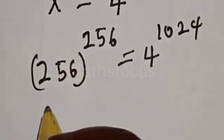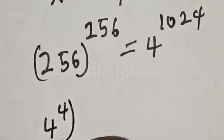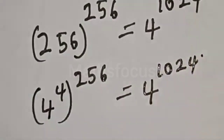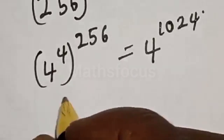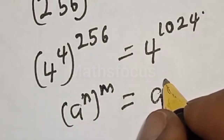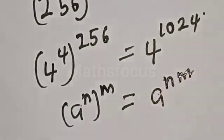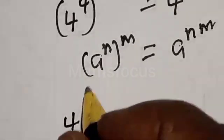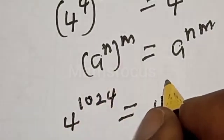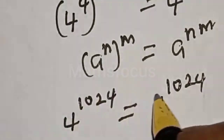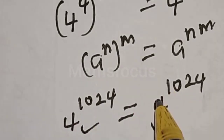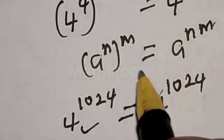Now, 256 is the same thing as 4 raised to power 4, so 4 raised to power 4 raised to power 256 is equal to 4 raised to power 1024. Notice that A raised to power N raised to power M is equal to A raised to power N times M. Therefore, 4 raised to power 256 times 4, that is 1024, is equal to 4 raised to power 1024, meaning the left hand side equals the right hand side, which satisfies the equation at S equals 256. If you enjoyed the class, please don't forget to like, share, comment and subscribe. Thank you.